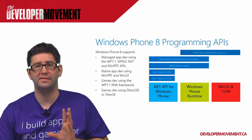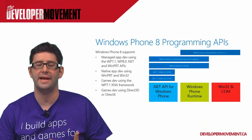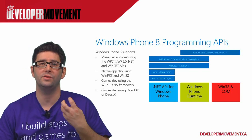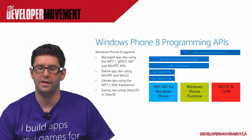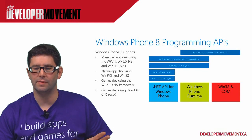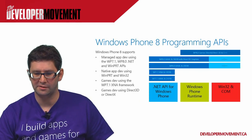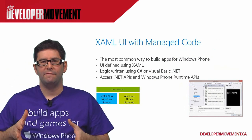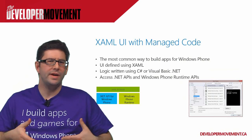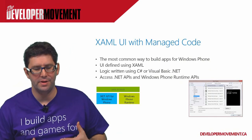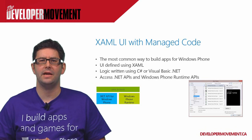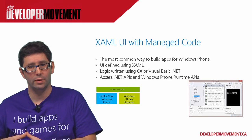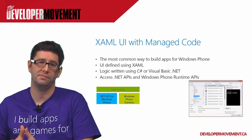If you want to do things in C++, that is now a model you can make use of today using unmanaged code — code that compiles directly to the platform without a managed layer, using DirectX and Direct3D. If you're building a traditional Windows Phone application the way you used to on Windows Phone 7.x, you can absolutely still do that in Windows Phone 8. That skill set is still absolutely usable, and there's not a whole lot of difference in how you build your applications.